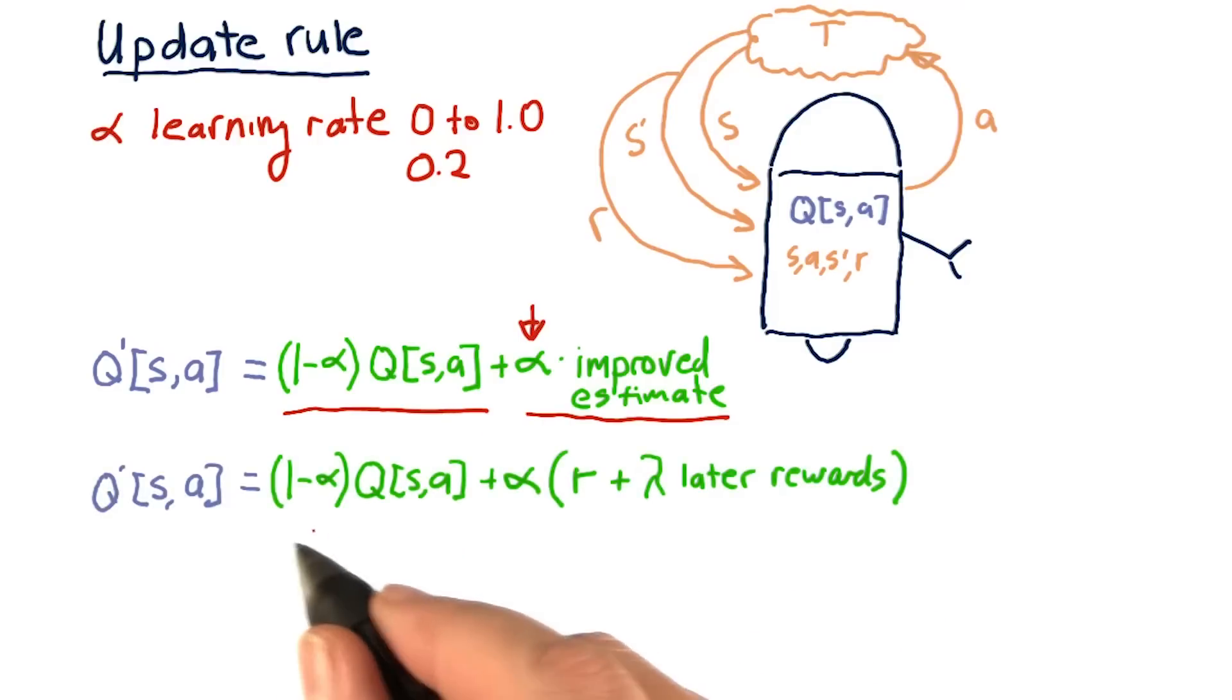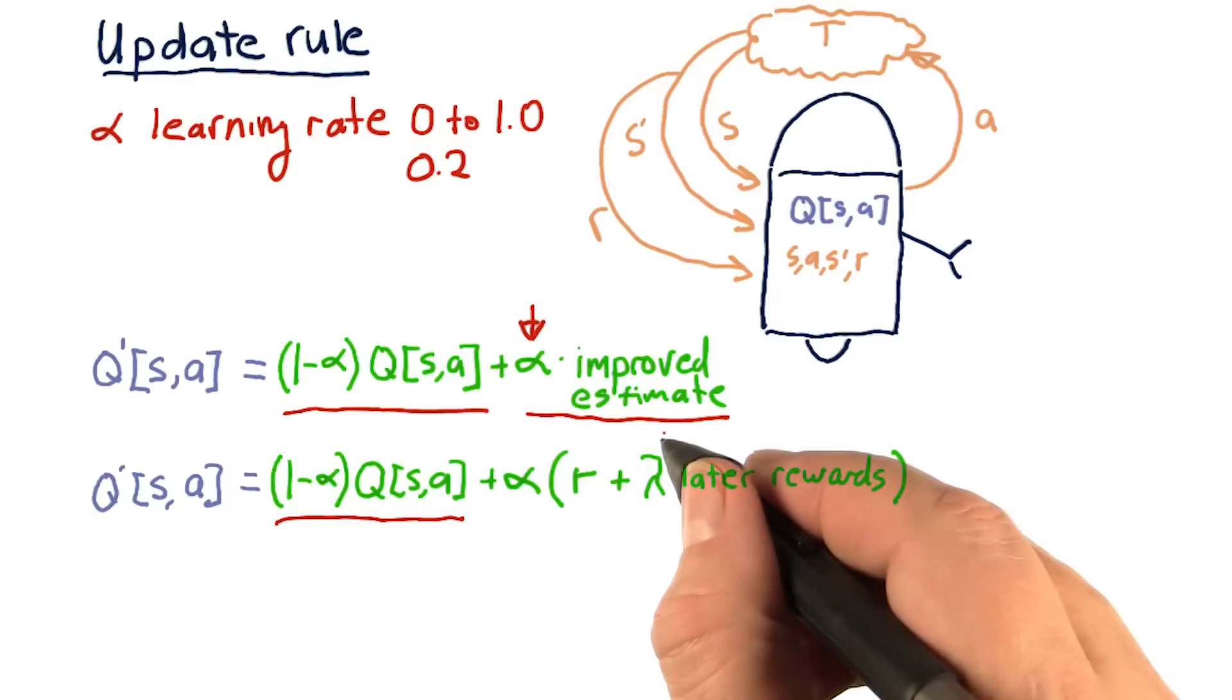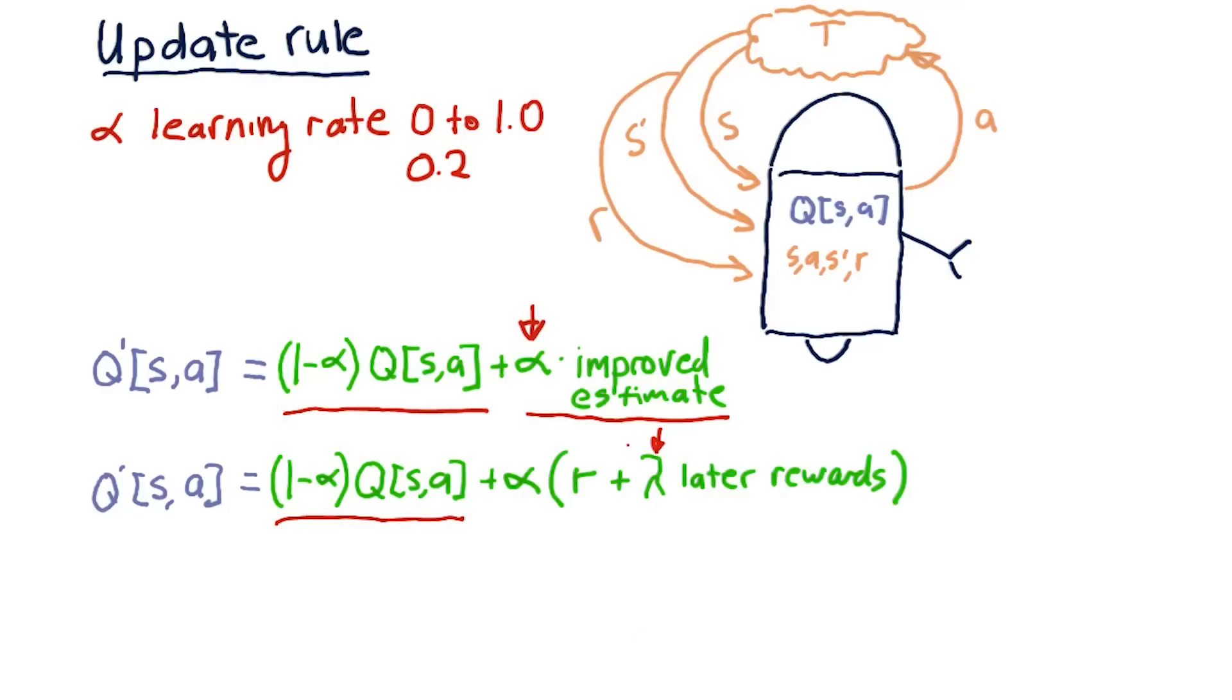So stretching it out in a little bit more detail, we have here our current value for the Q at S A, plus alpha times the immediate reward, plus gamma times later rewards. Now we're introducing gamma here. So I promise there's only two new parameters here that you have to worry about.